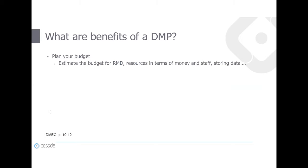DMPs are also very useful for planning your budget. Research data management is not free — it has a cost both in terms of money and staff. Storing data may be costly, though many repositories archive data for free. If you pursue a different approach, you may need funding for that, making a DMP a good starting point for thinking about the budget needed for research data management.